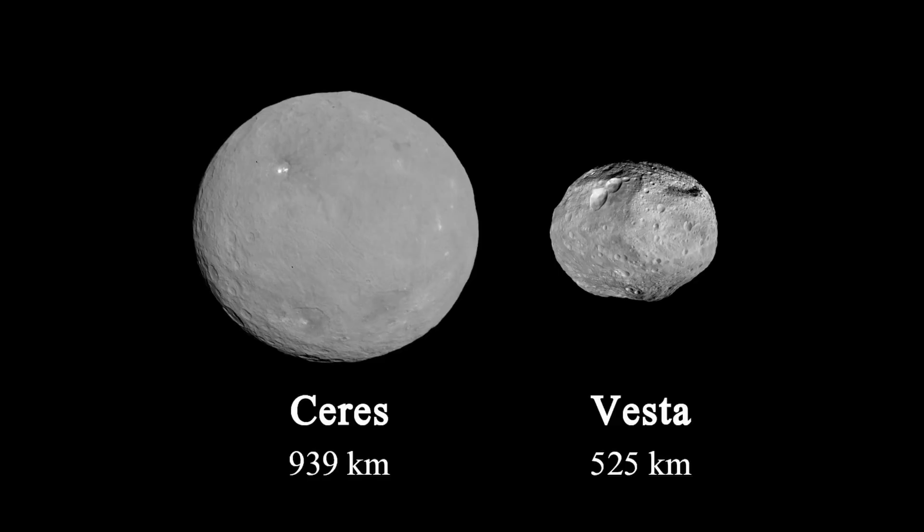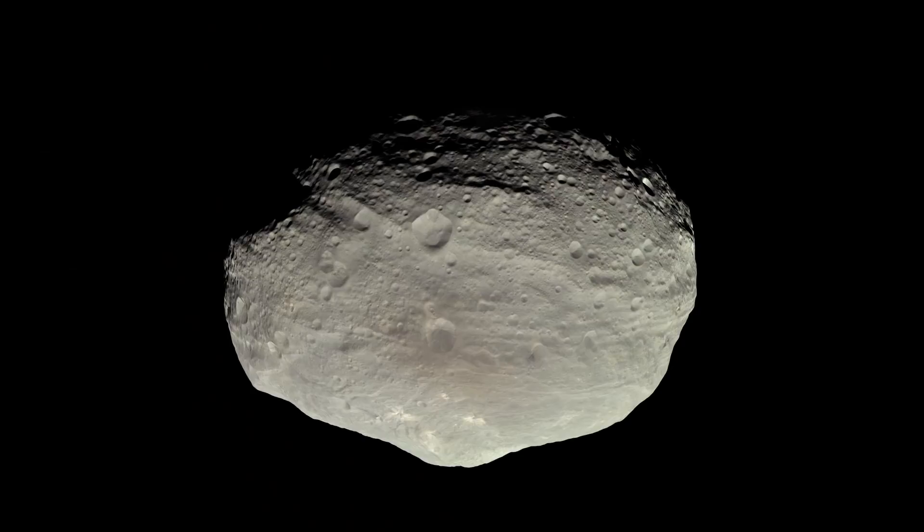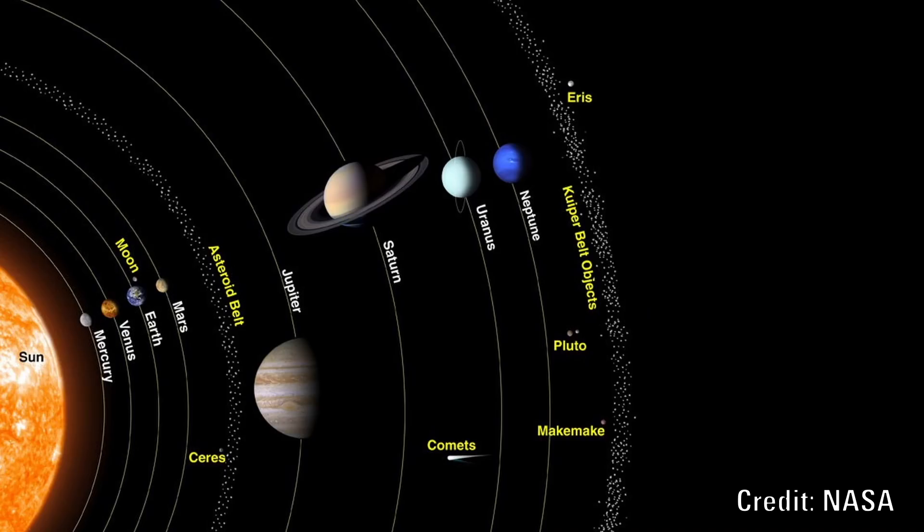He proposed that these two objects were the remnants of a destroyed planet. Vesta's density is lower than those of the four terrestrial planets but higher than most of the asteroids and all of the moons in the solar system except Io.